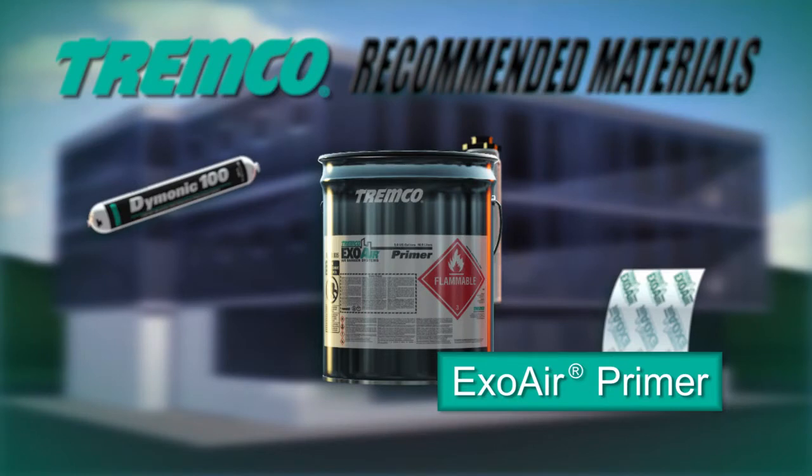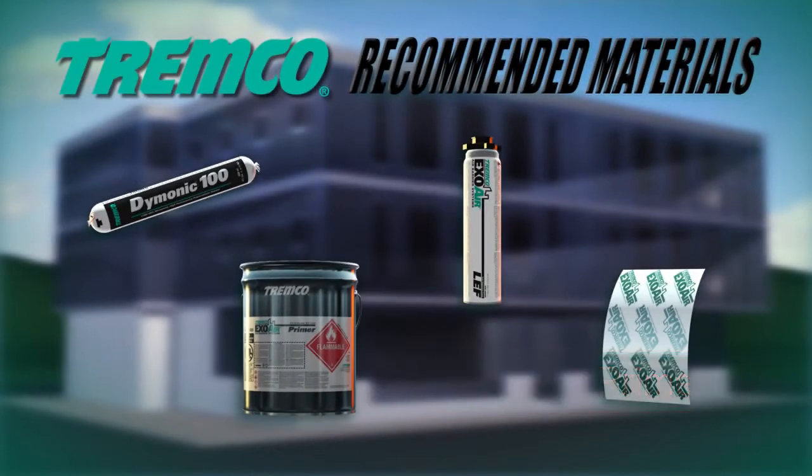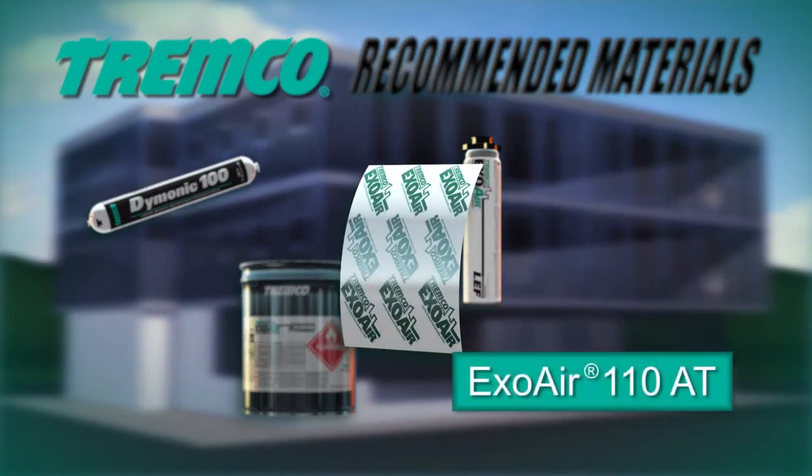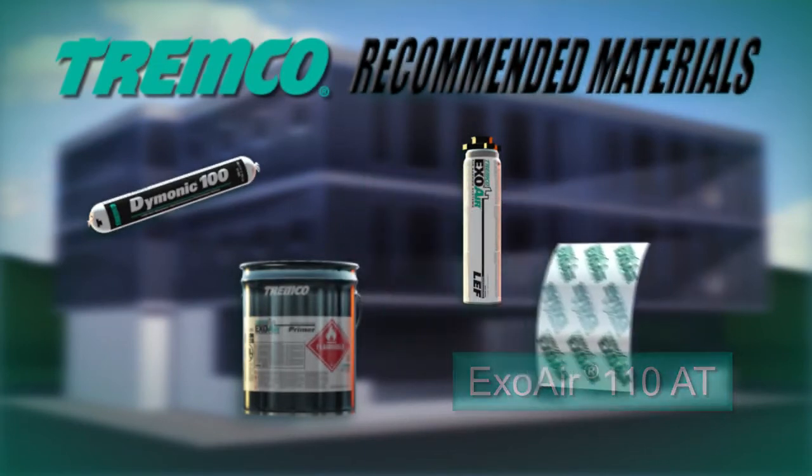It can be applied to common construction substrates using a brush or roller. ExoAir 110AT is a composite 24mm sheet designed for use as the membrane or as a component of an air barrier system.